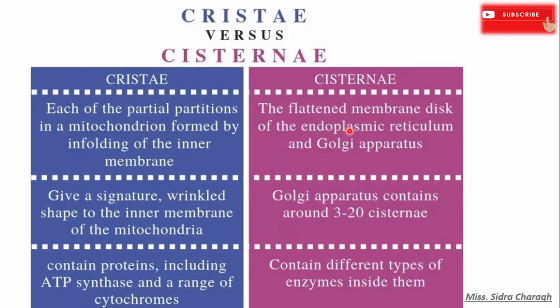Whereas cisternae are the flattened membrane discs of the endoplasmic reticulum and Golgi apparatus. Cristae give a signature wrinkled shape to the inner membrane of the mitochondria, whereas the Golgi apparatus contains around two to twenty cisternae structures. Cristae contain proteins including ATP synthase and a range of cytochromes, whereas cisternae contain different types of enzymes inside them. These are the main differences between cristae and cisternae.